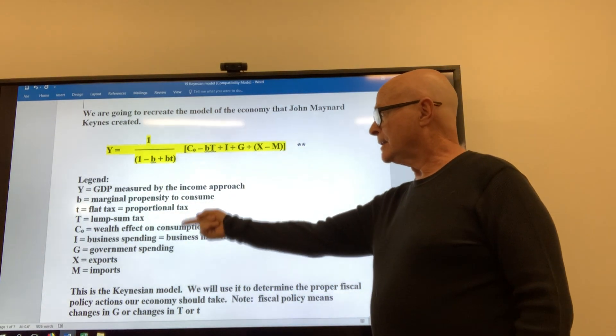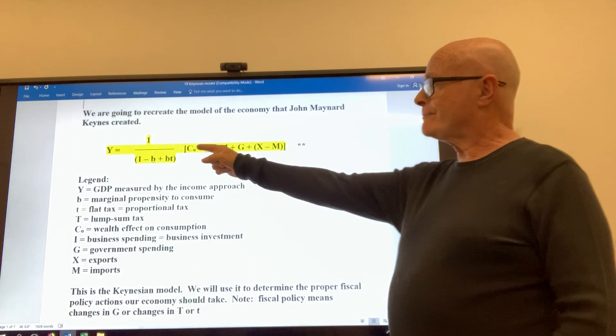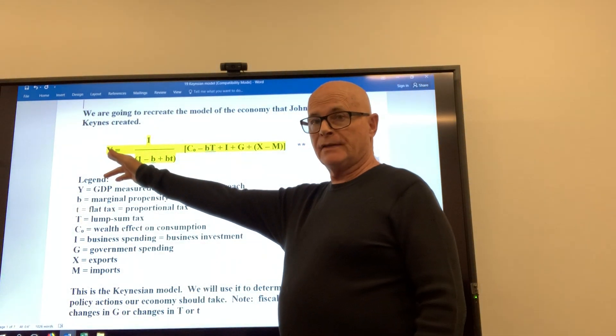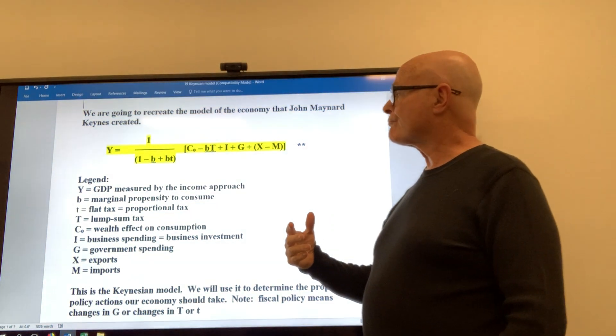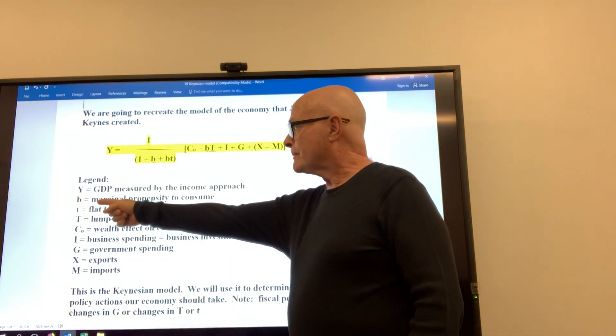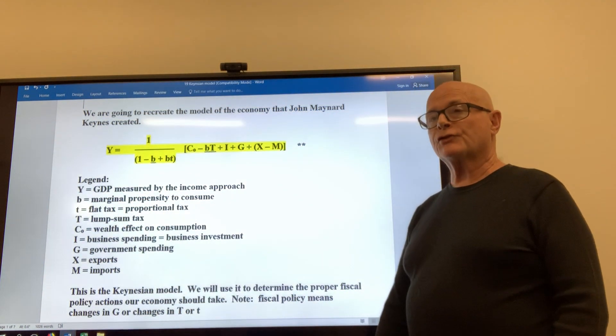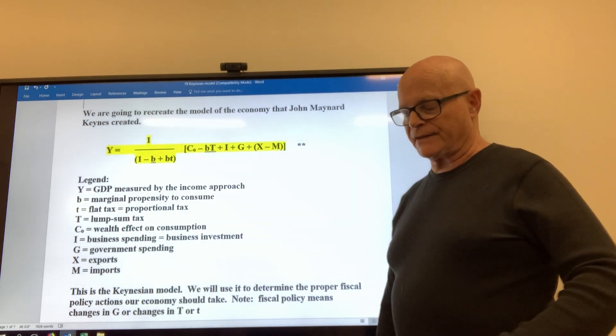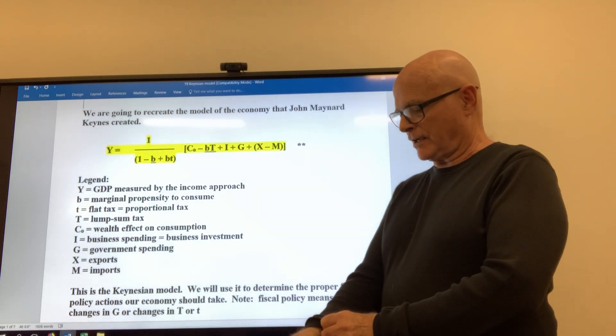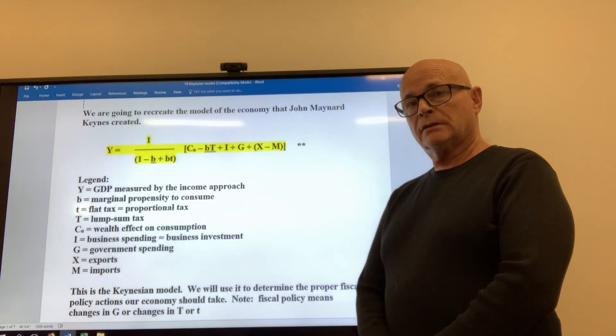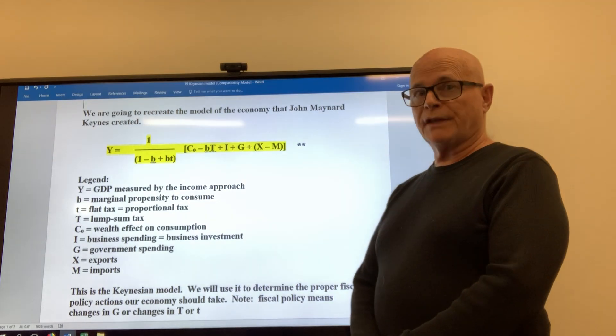All the things in here are defined in this legend. So Y is gross domestic product, basically your output for the country. Lowercase b is what Keynes called the marginal propensity to consume. That means if you gave the average person in the country a dollar of money to spend, how much of it would they spend and how much would they save?